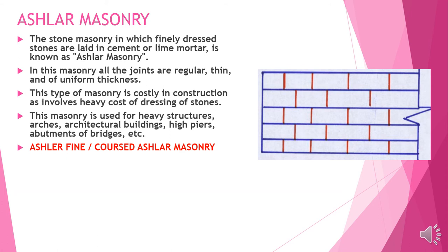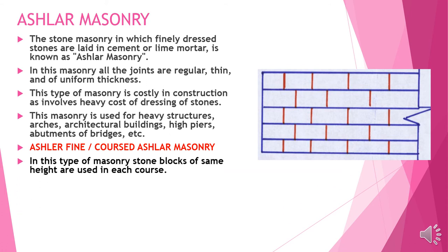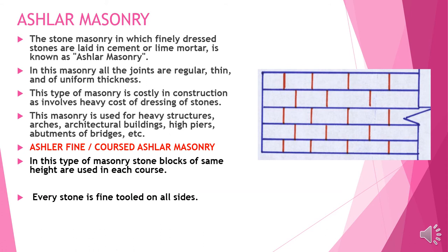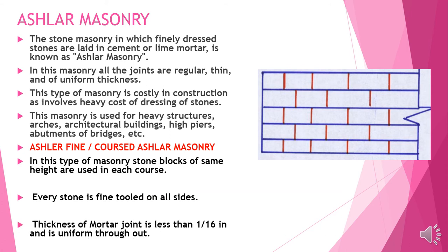Aslar fine course masonry: in this type, stone blocks of the same height are used in each course. Every stone is fine tooled on all sides. The thickness of the mortar joint is less than 1/16 inches and is uniform throughout.